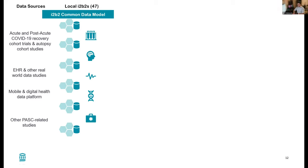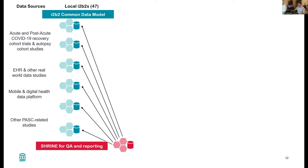This work essentially consists of having these types of data added into local I2B2s around the country, represented here by a common data model. These icons represent the various complexity of different types of data, including device data and imaging. SHRINE would be able to connect to all of these I2B2 sites for both QA and reporting throughout the process.